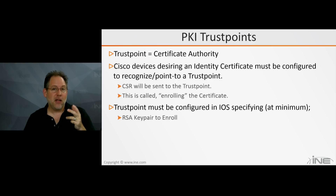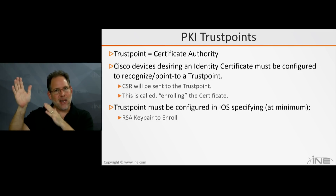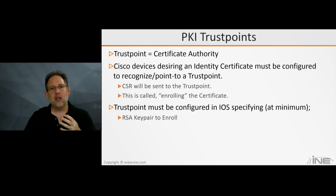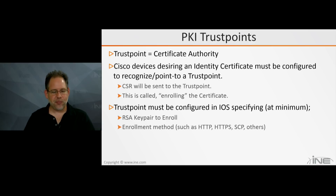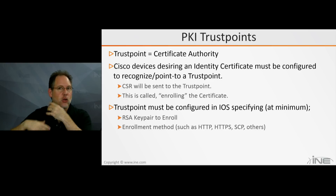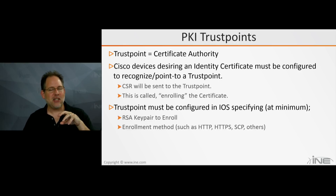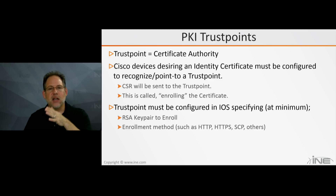You could potentially have several key pairs, so when enrolling with a particular trust point I need to know which key pair I'm going to use, so I send the appropriate public key to that trust point. I also have to specify my enrollment method — in other words, what protocol I'm going to use to speak to that certificate authority. Typically we use HTTP, and if you specify HTTP that means HTTP is your transport mechanism, but within the body of the HTTP you're actually using the SCEP protocol — the Simple Certificate Enrollment Protocol.